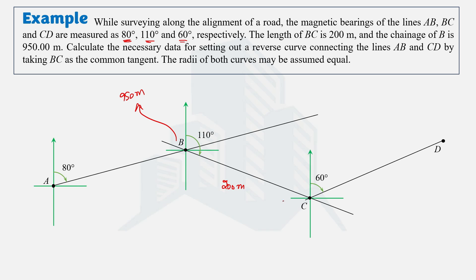Since the reverse curve connects lines AB, BC, and CD, where BC is the common tangent, we will have one circular arc connecting AB and BC, then another arc bending in the opposite direction — its center on the other side. The end point of the first curve is the start point of the second curve, forming the reverse curve with BC as the common tangent.